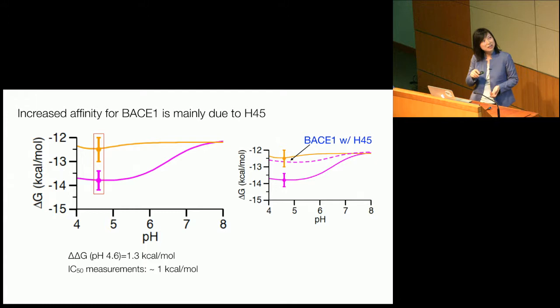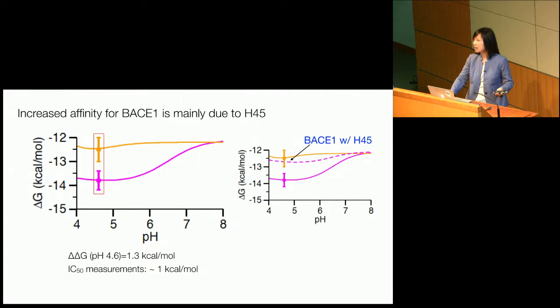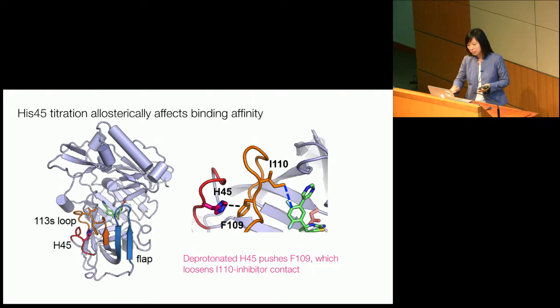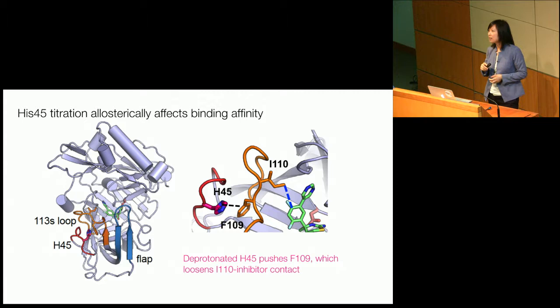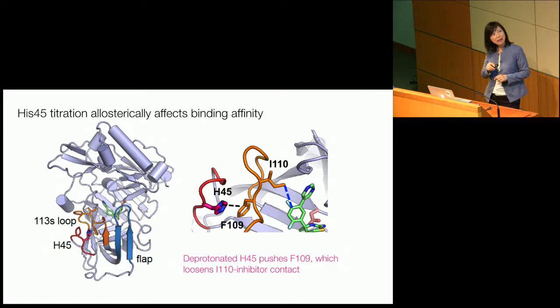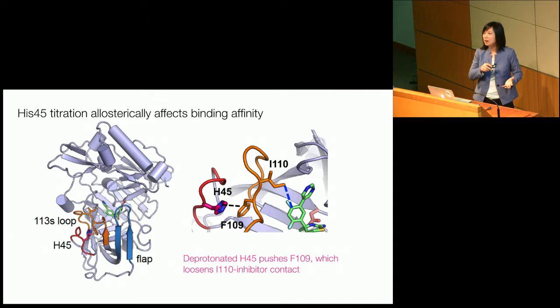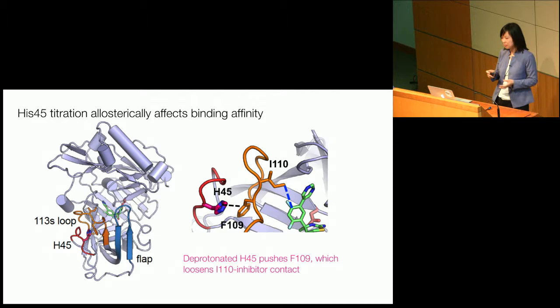Namely, what happened to histidine 45? The histidine is a large contributor — you would think it's very close to the binding site or directly contacting the inhibitor. However, looking at the structure, histidine 45 resides on a loop next to the 110-113 S loop that can contact the inhibitor. It turns out when histidine 45 titrates, it can move from solvent to contact phenylalanine 109, which then in turn perturbs the interaction between isoleucine 110 and the inhibitor. At low pH, it's swung out to solution and doesn't contact phenylalanine, so binding is not perturbed. When it's neutral, it contacts phenylalanine, distorting the binding site. So we have proton-coupled allostery.